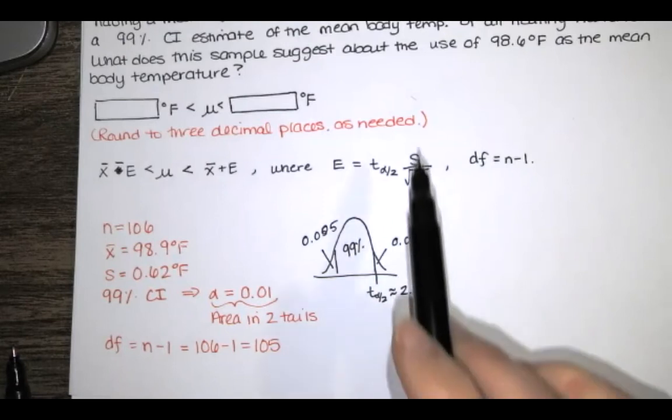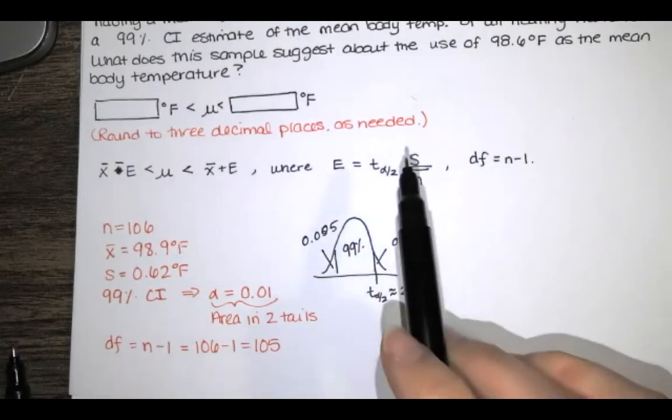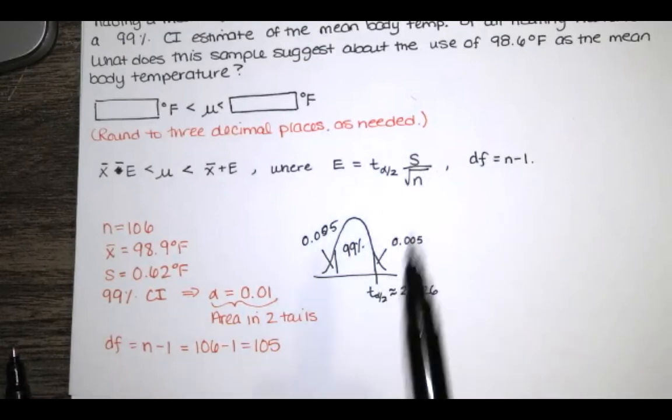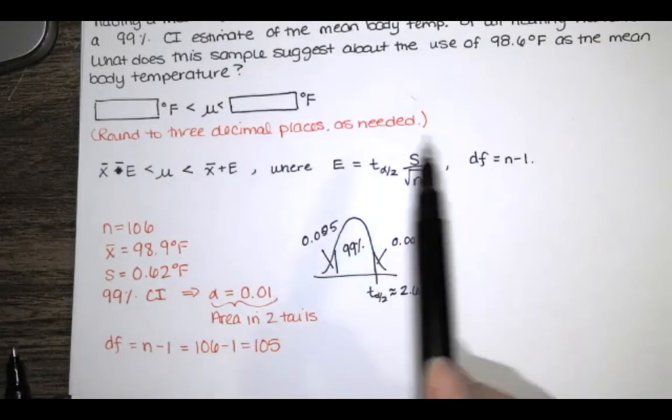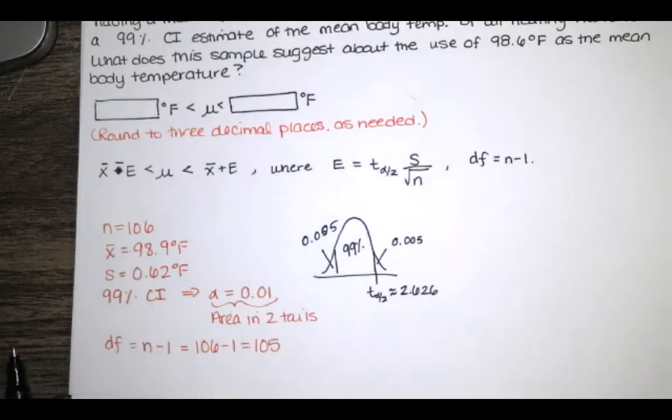I can take that, multiply by the standard deviation of the samples, divide by the square root of the sample size to get my error, and add and subtract that error from x̄ to get the upper and lower limits. That's what I would do without technology. But with technology, I can find a better estimate of that t sub α/2. So I'll show you how to do this using Excel.